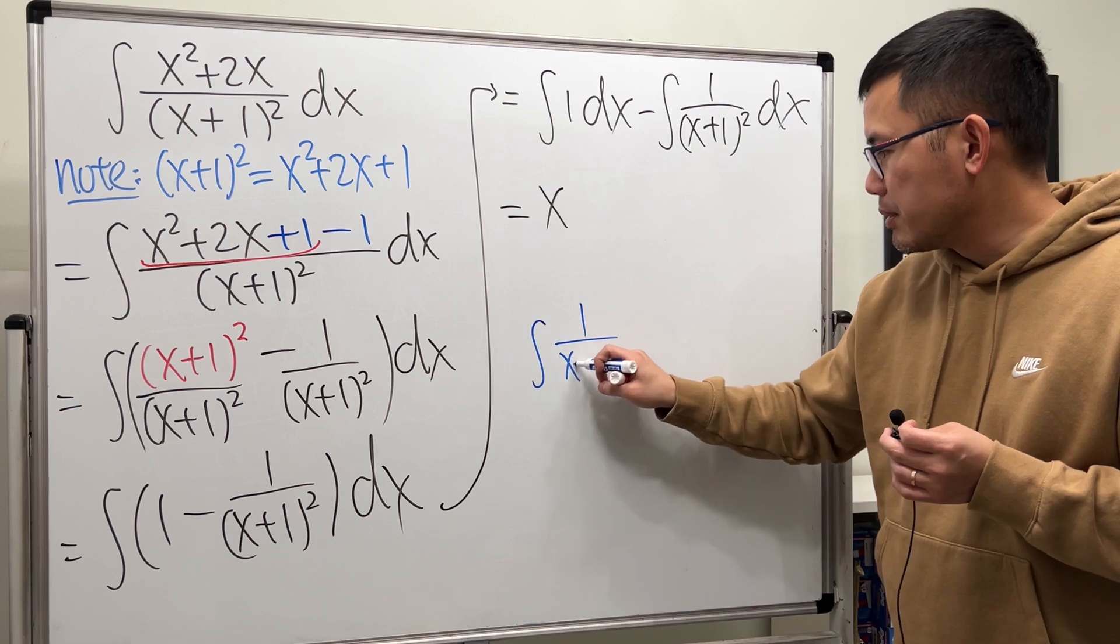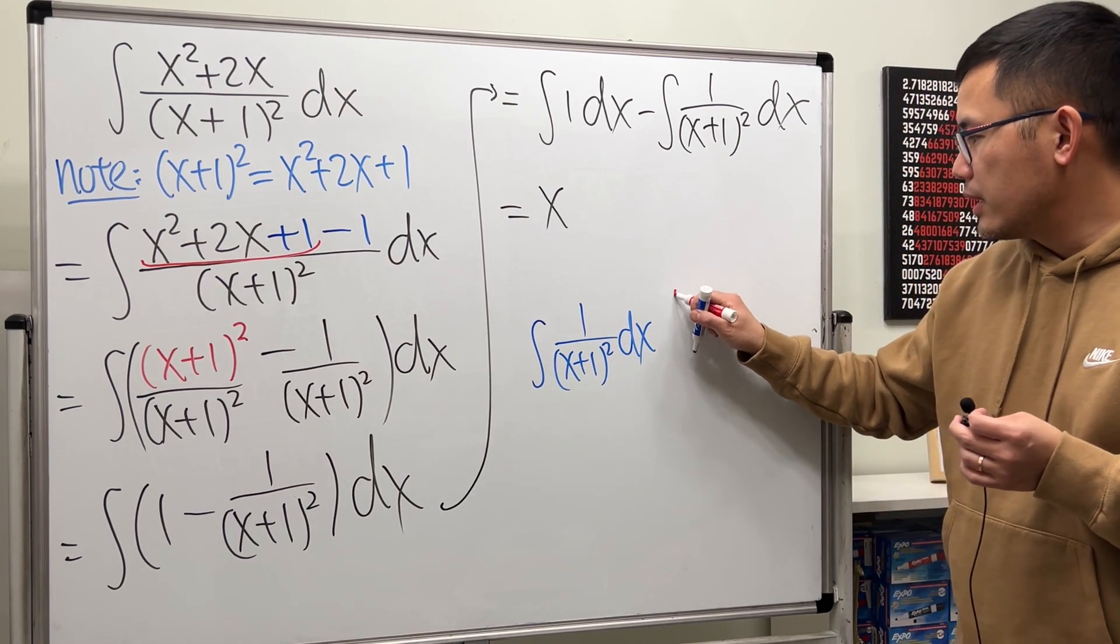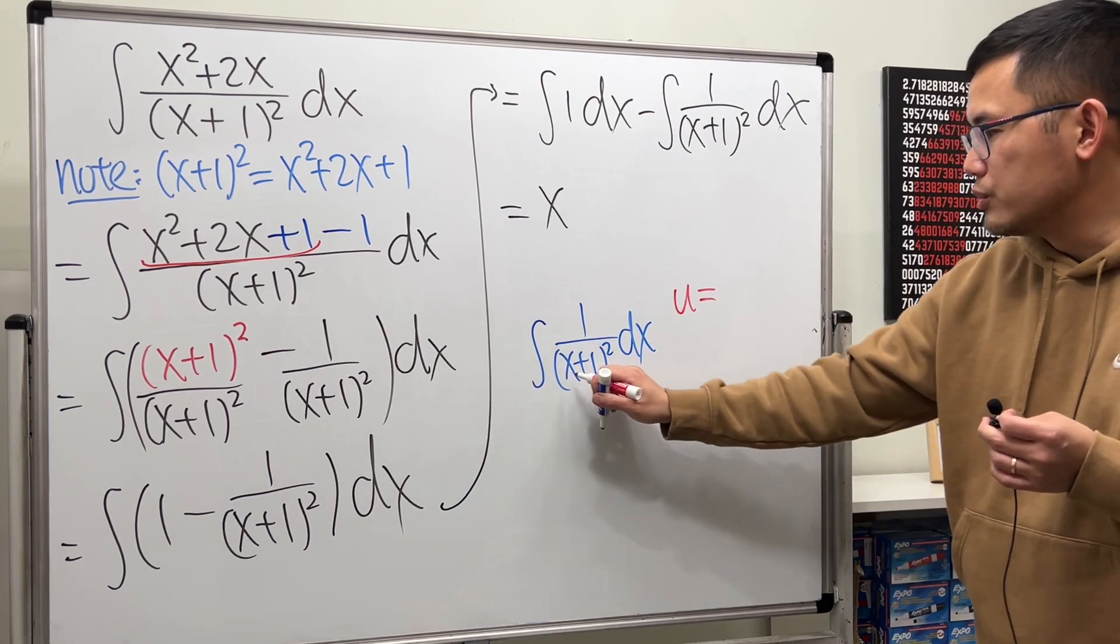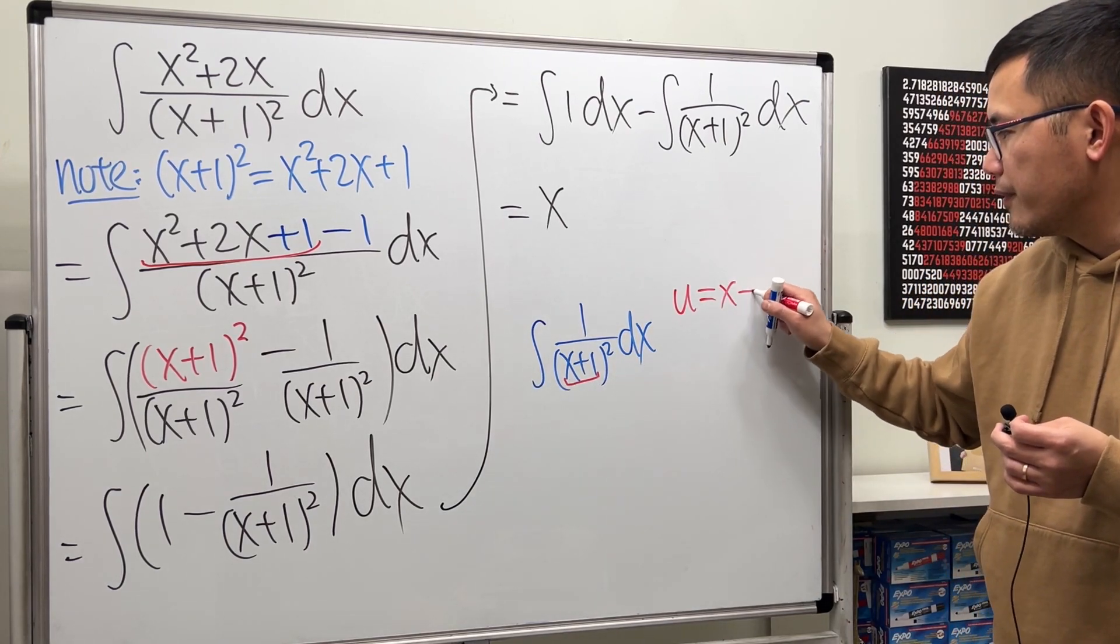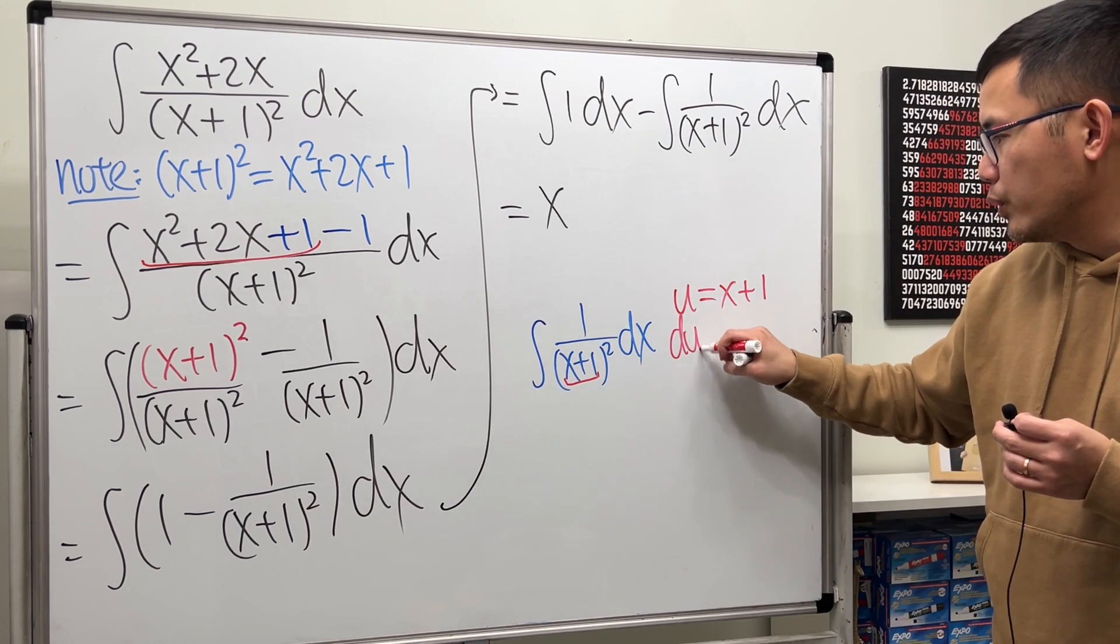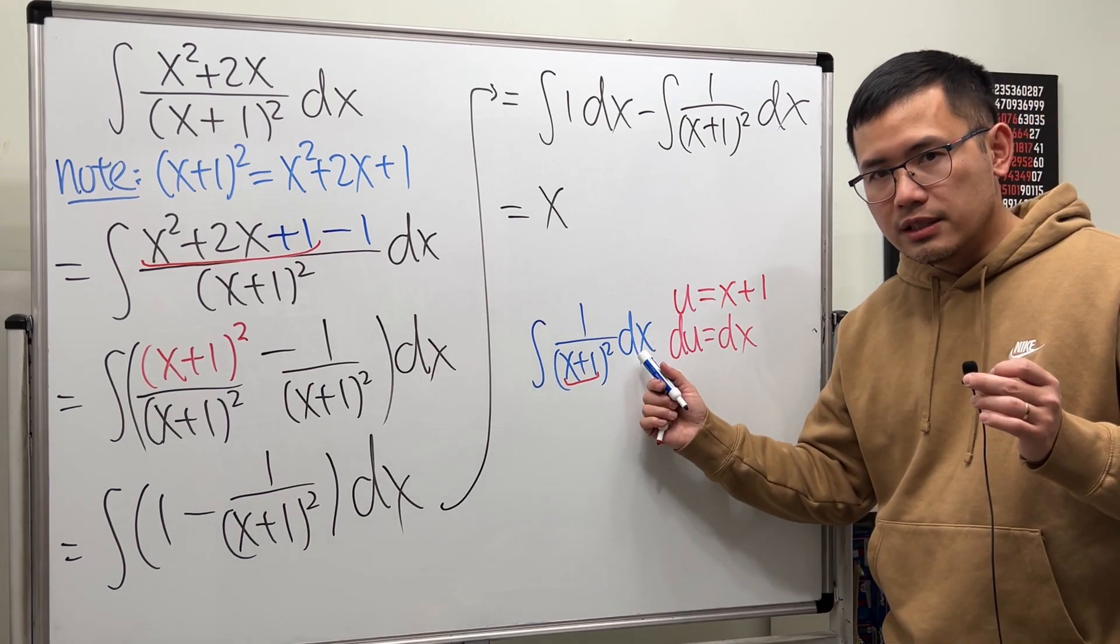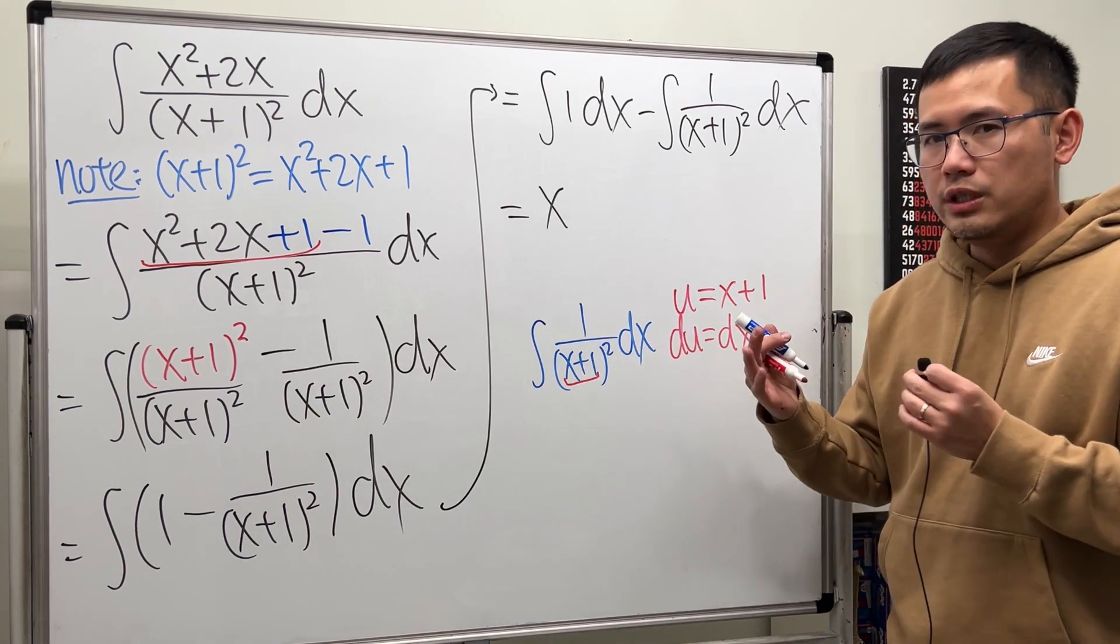Integral of 1 over x plus 1 squared. We are going to take u to be the input, which is x plus 1. Differentiating both sides, we get du equals dx, just 1 dx, just like that.